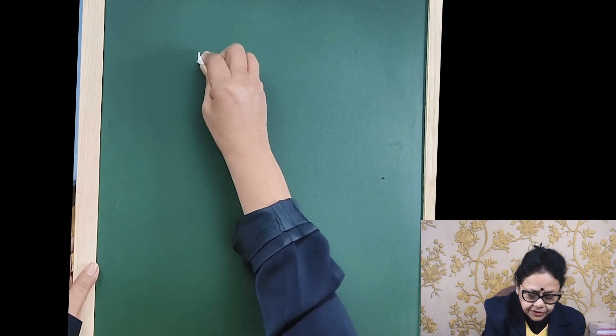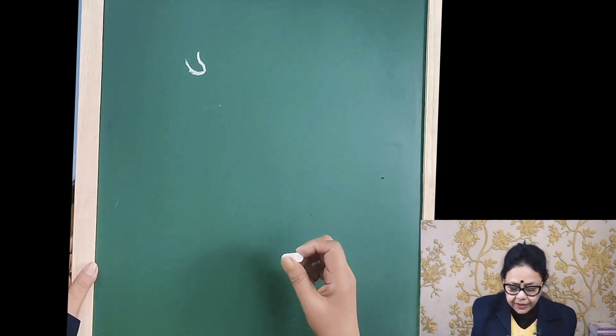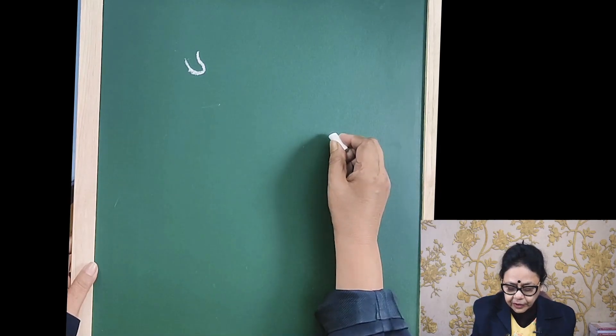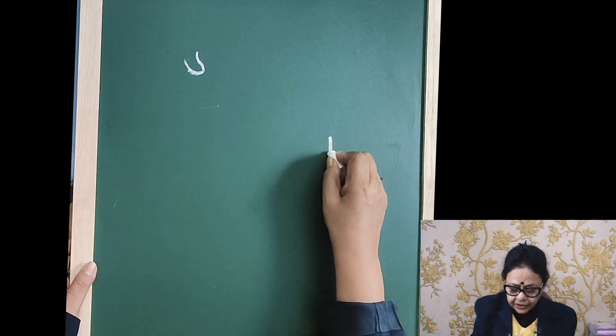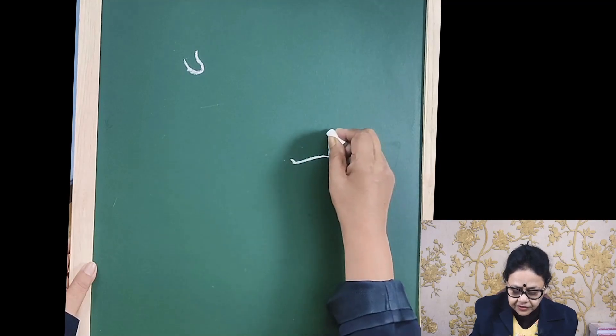Today I will show you how to draw the femoral triangle. First you will draw the anterior superior iliac spine. Then below and medially you will do the symphysis pubis.